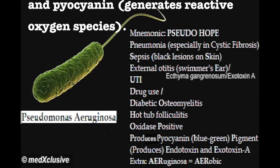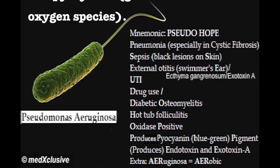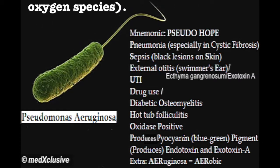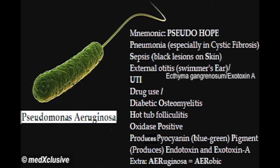Here is the mnemonic to help you remember about this bacteria. The mnemonic is PSEUDO-HOPE. P reminds us of pneumonia, especially seen in patients with cystic fibrosis.